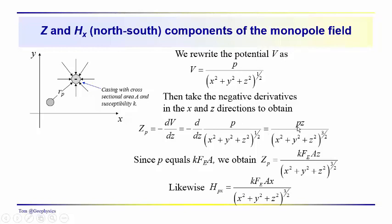And if we take the negative derivative of this term, we get that the vertical component of the field is equal to the pole strength times the depth z over x squared plus y squared plus z squared to the three-halfs power.